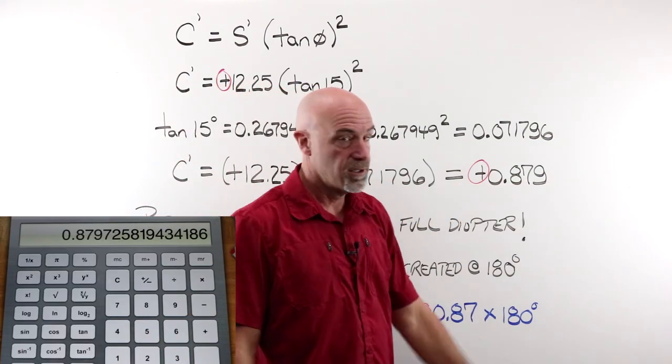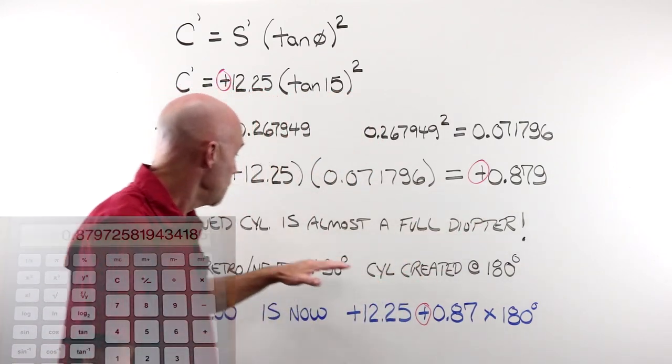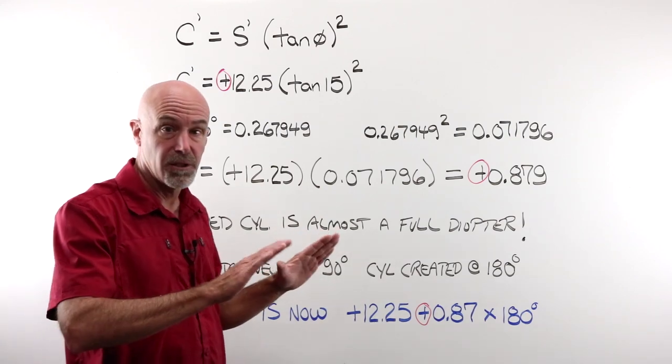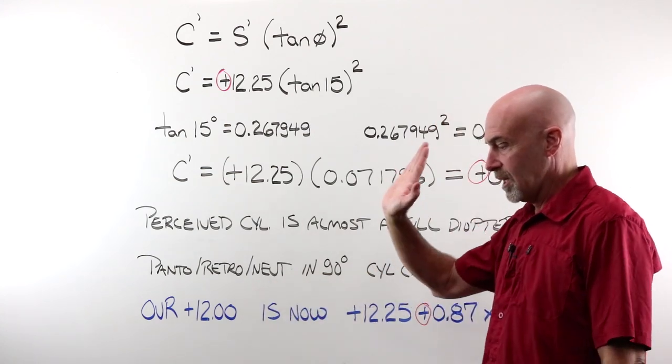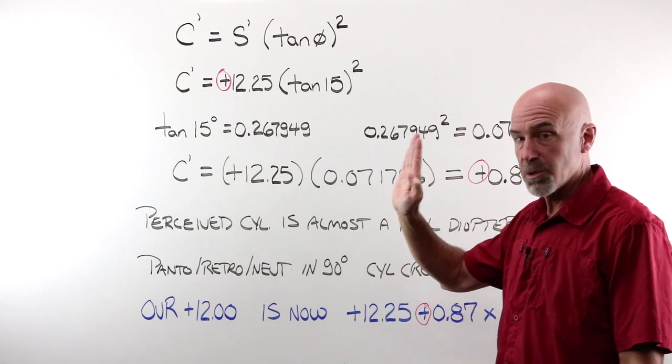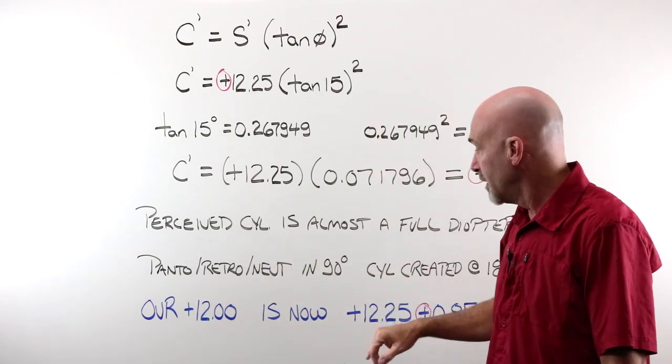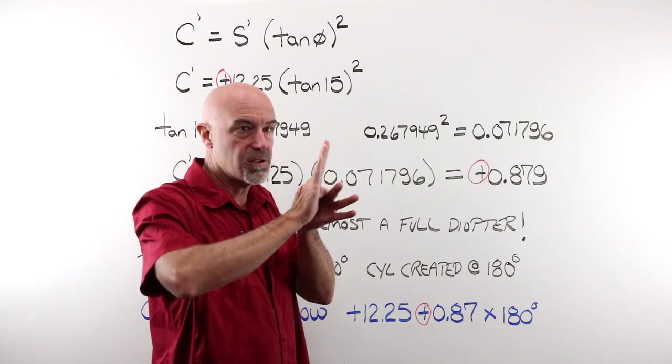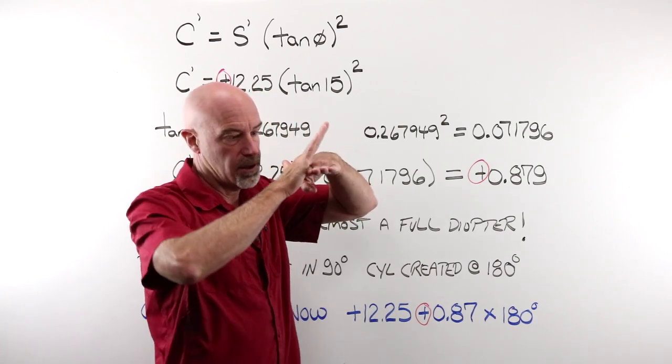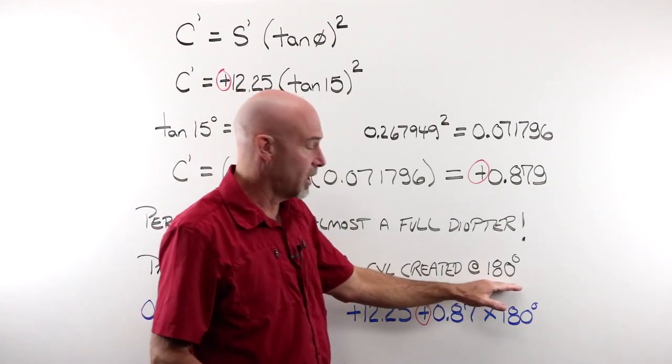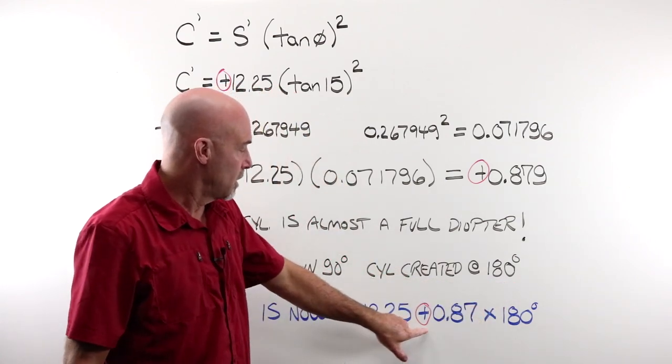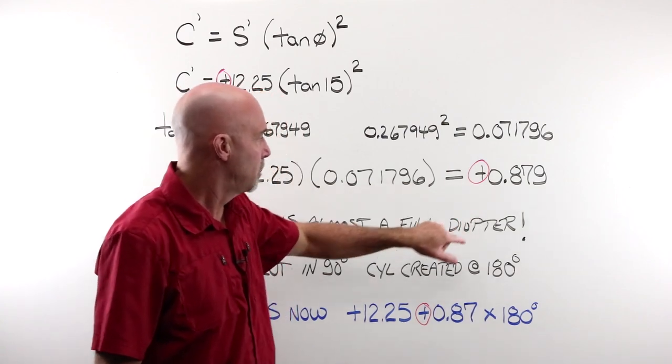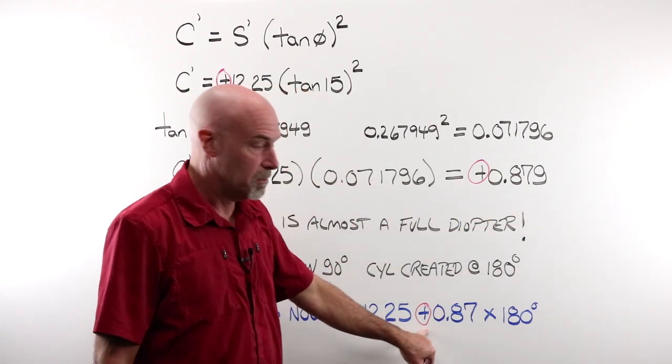If I take my 12.25 and multiply it times my 0.071, I end up at plus 0.879. Almost a full diopter of cylinder is perceived, or created in that lens, by tilting it. Because the tilt is vertical, the power we started with is at the 90th, Panto Retro Neutral, the cylinder that is created is created 90 degrees away, at 180, because it is the axis of rotation. It's this one that the lens is rotating around. So our cylinder is created at 180. The cylinder amount comes from the original power in that meridian. So I have a plus 12.25, I end up with a plus 0.879. My cylinder value is a plus. That's where that comes from.